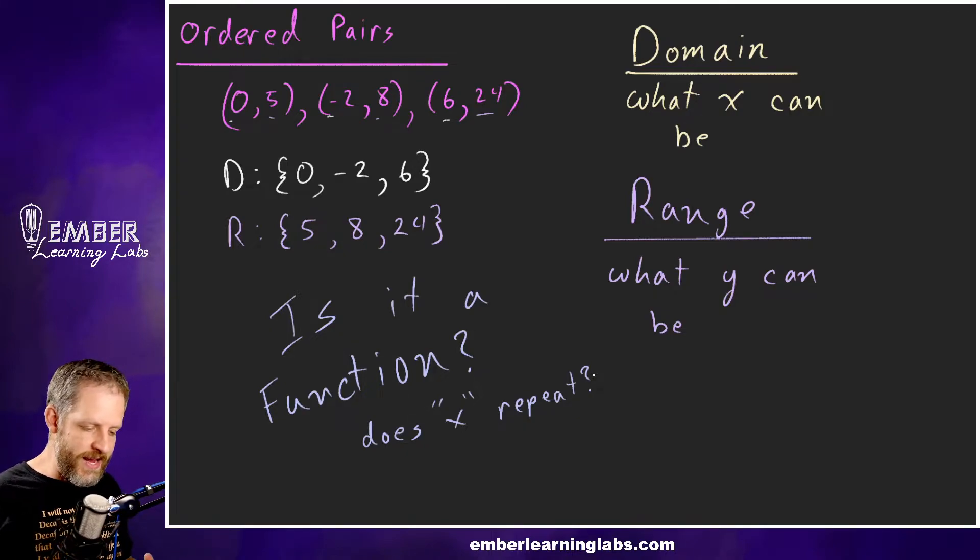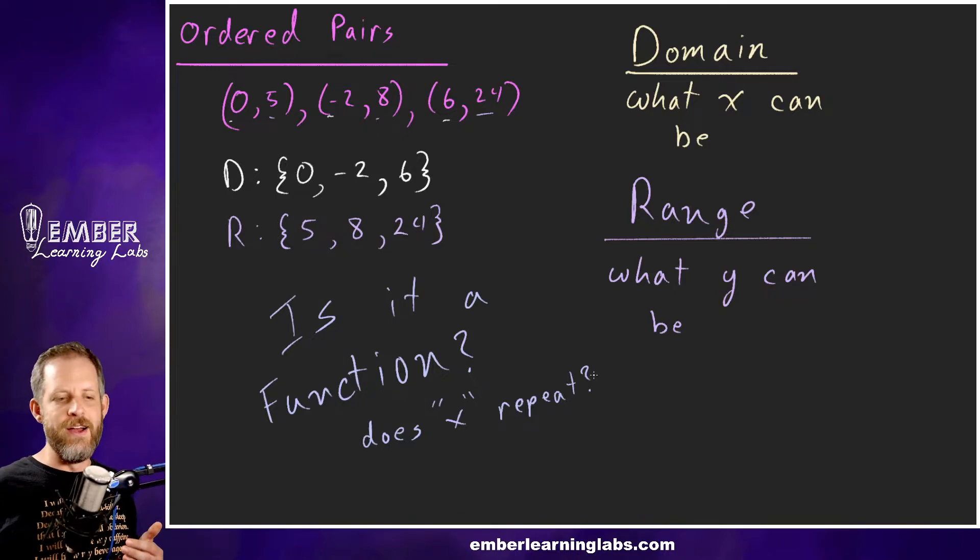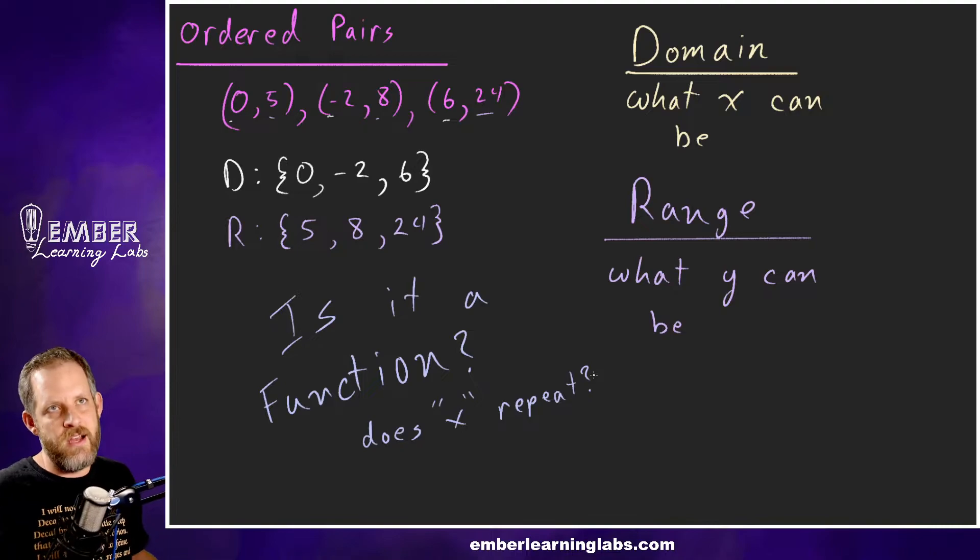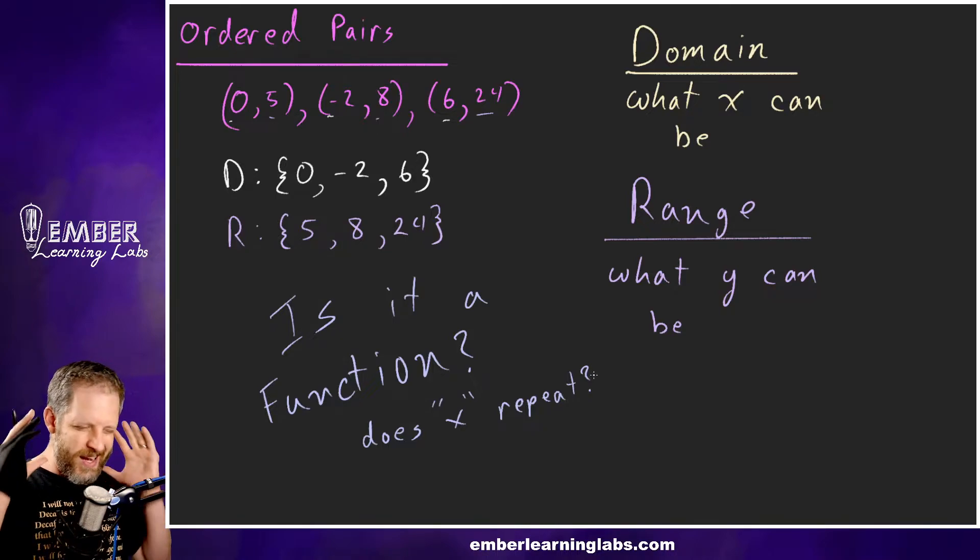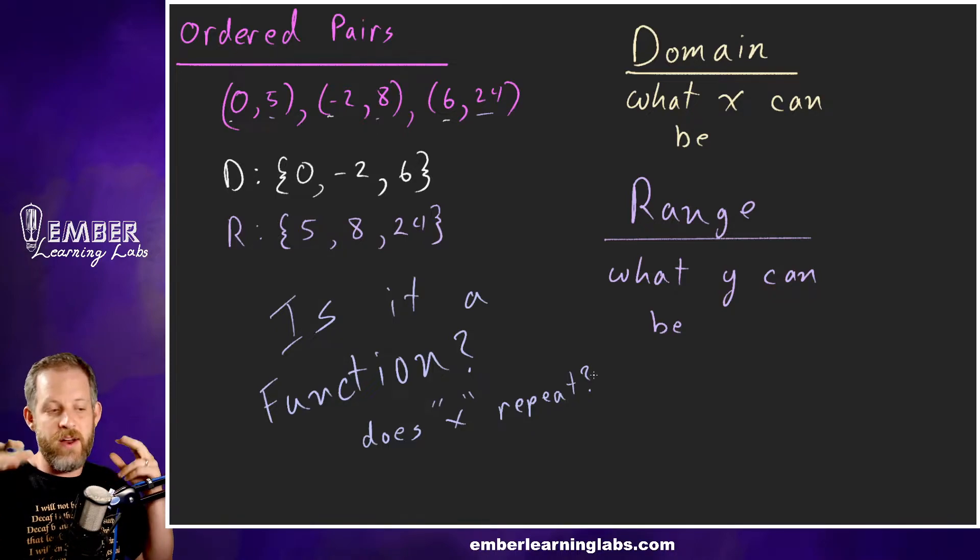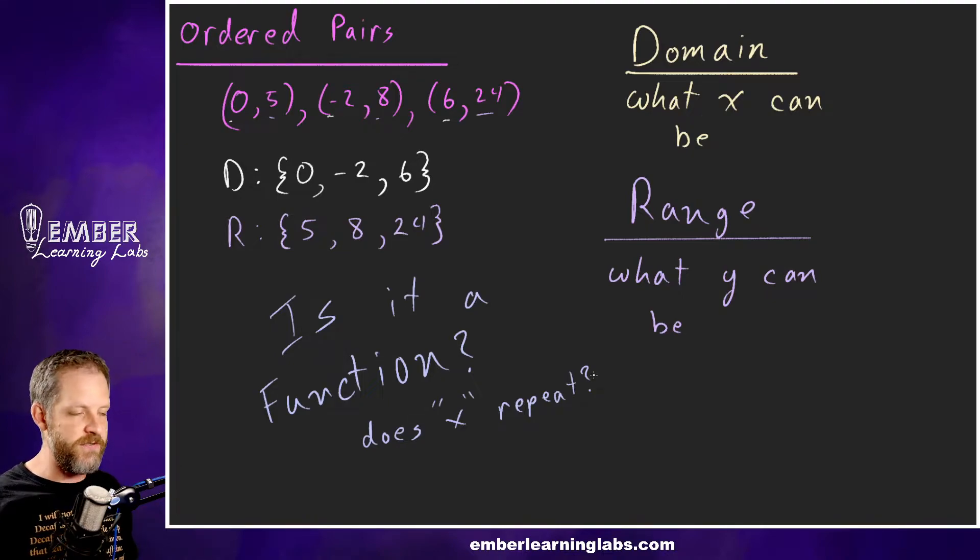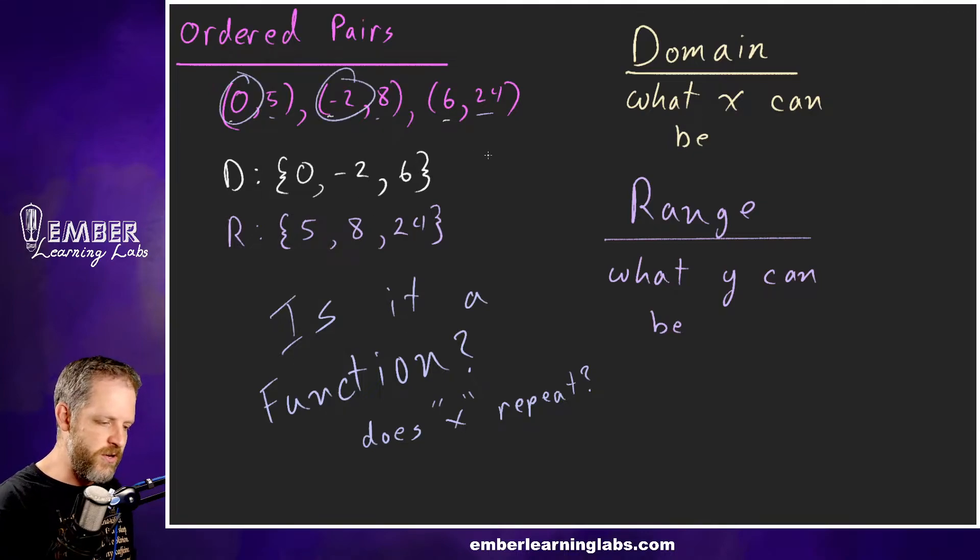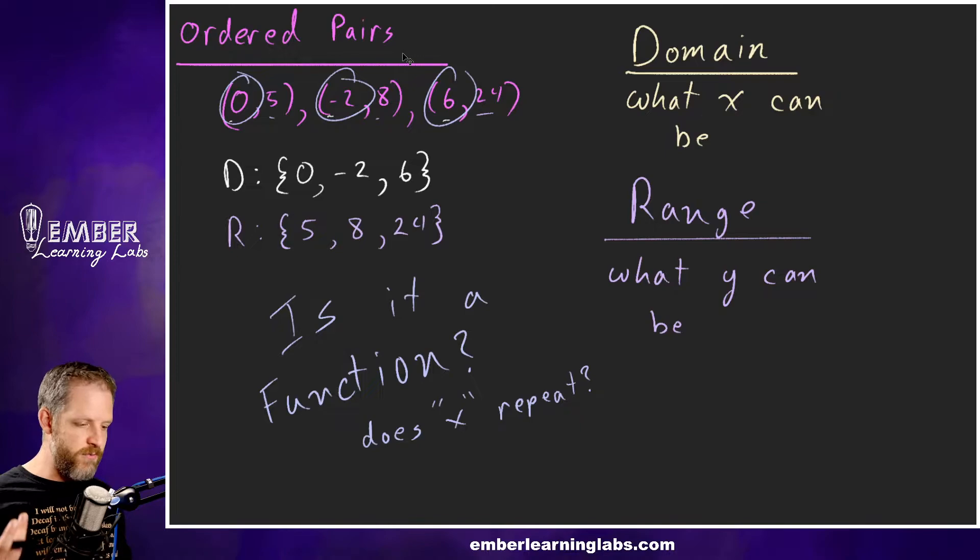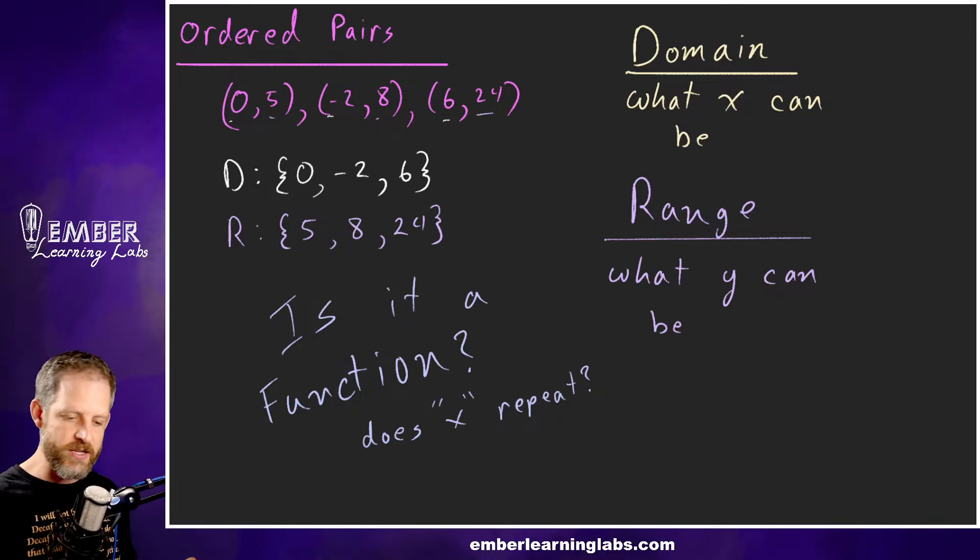At this point in Algebra 2 we're taking stuff that we've learned in Algebra 1 and we're kind of shortcutting it. That's really kind of what we need to think—that's the shortcut phrase: does x repeat? In this case, is this a function? Well yes, this is a function because 0, -2, 6 never repeats. We don't have zero pointing to two different things.